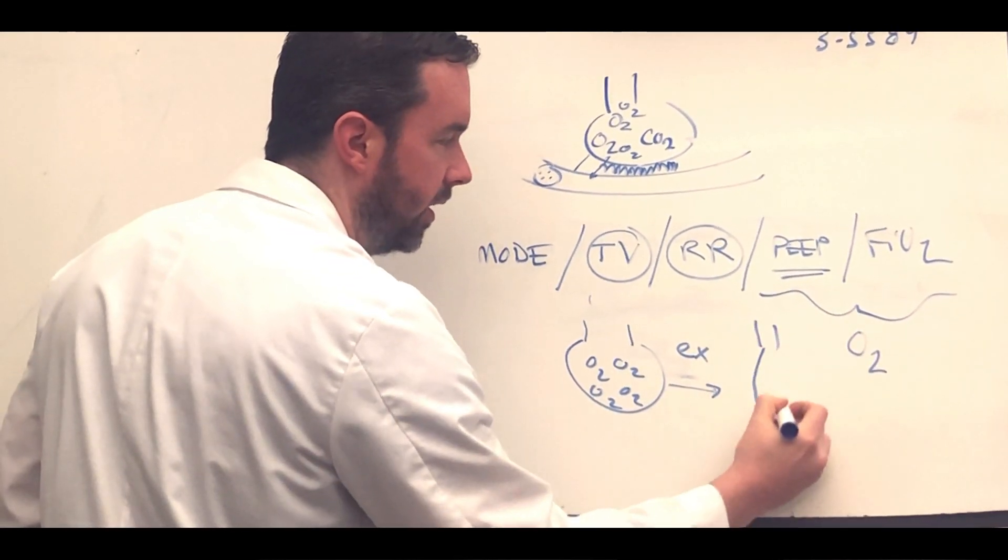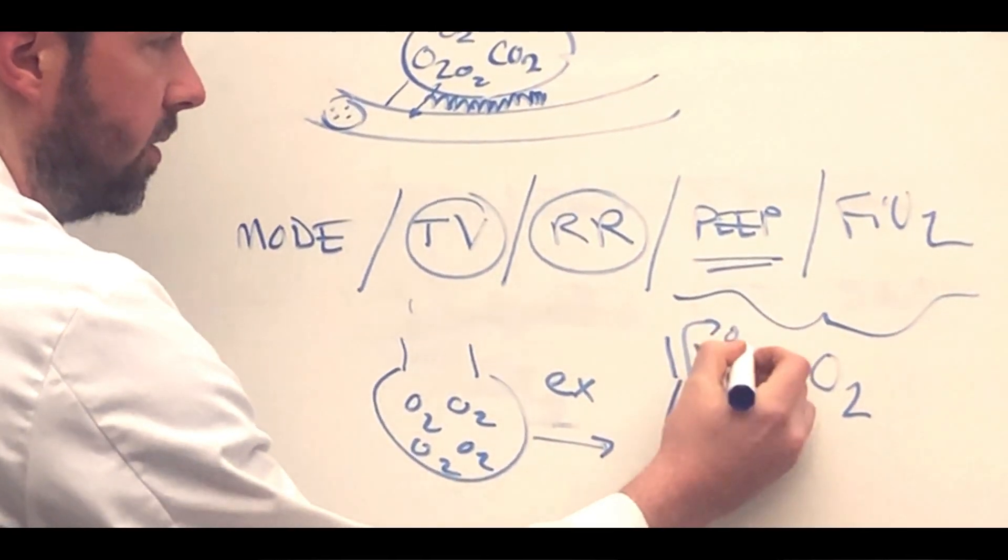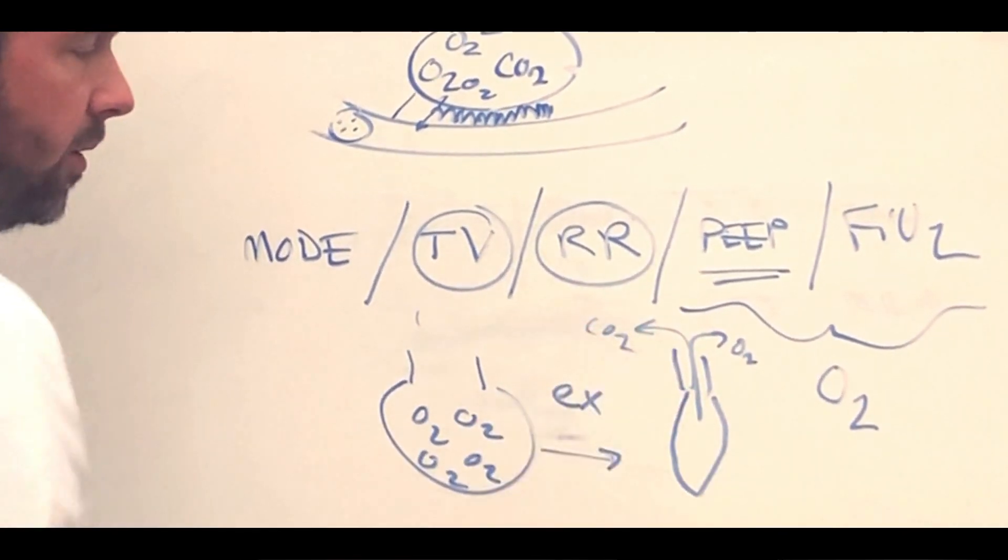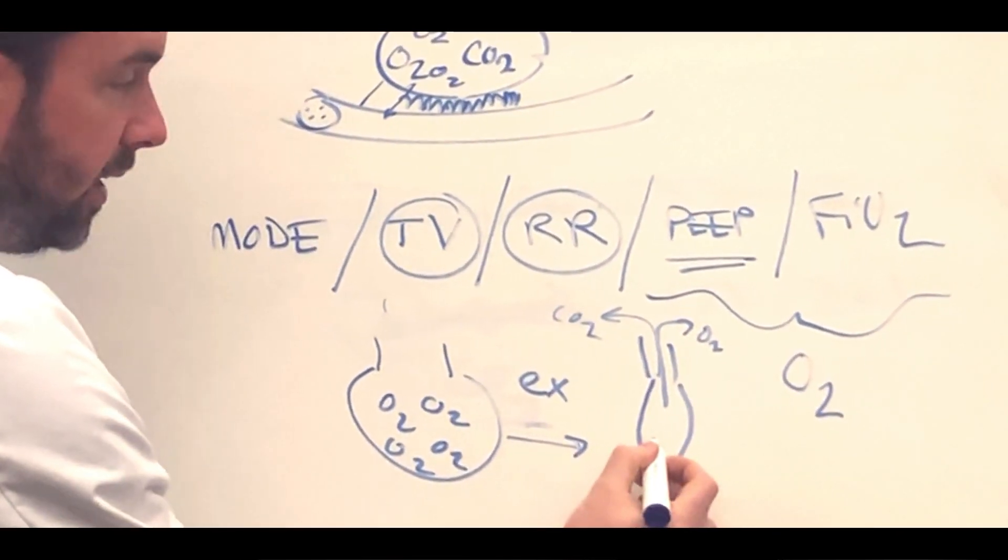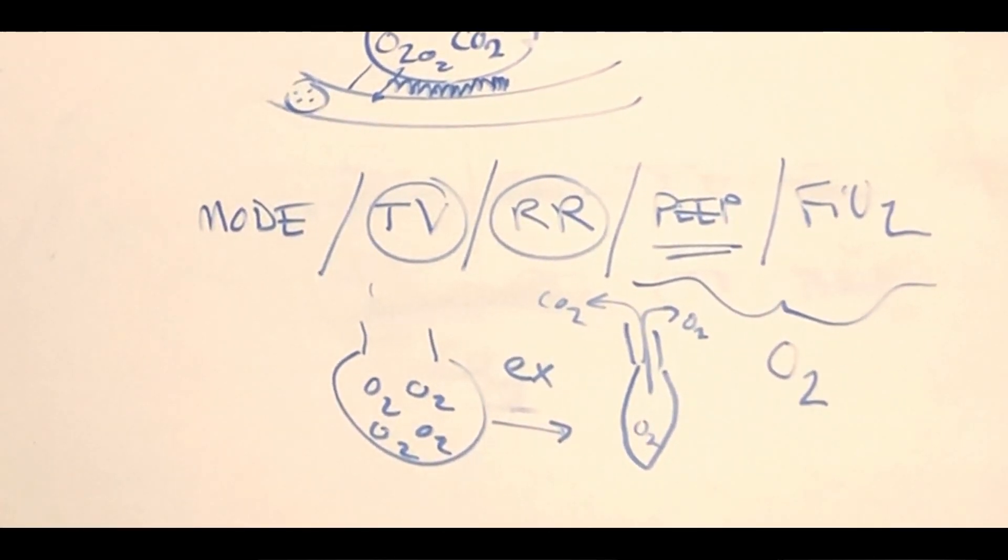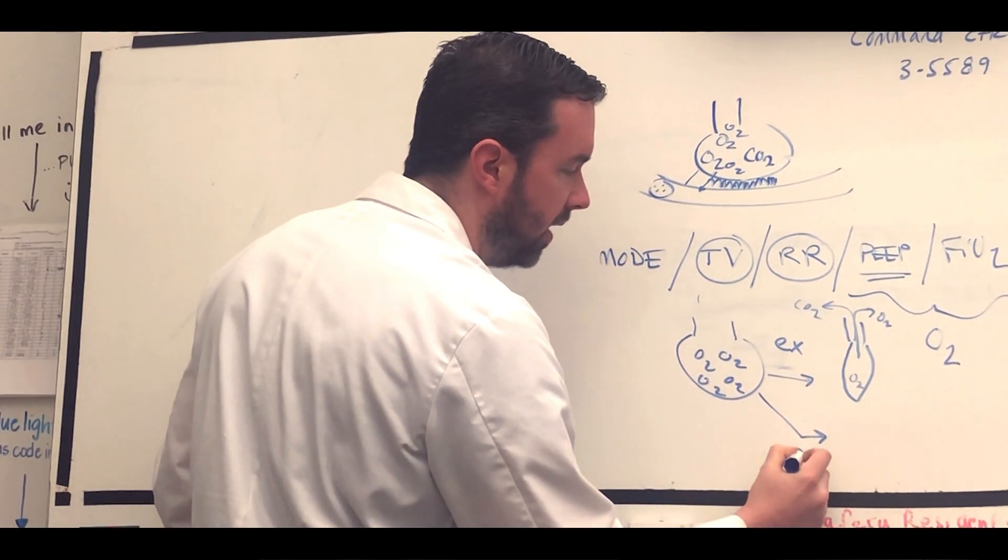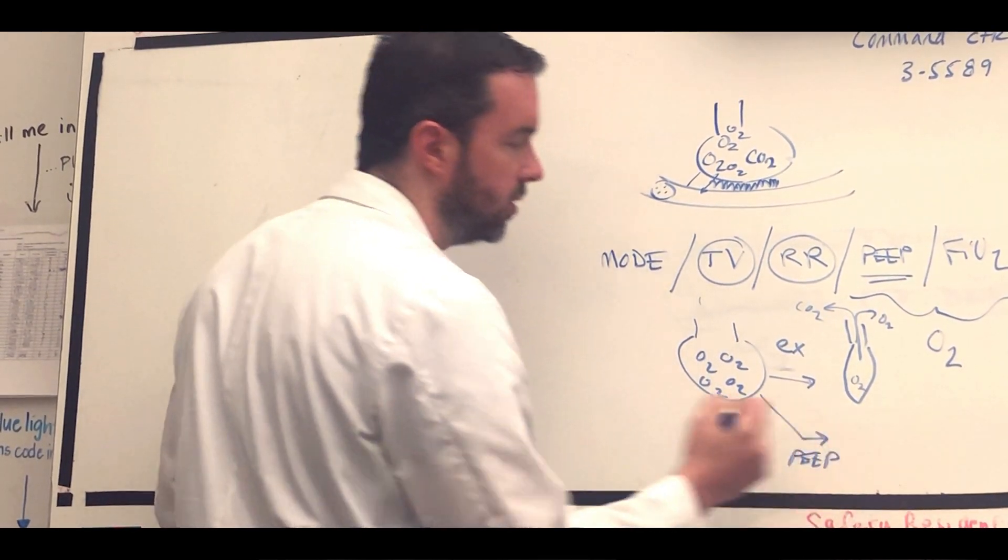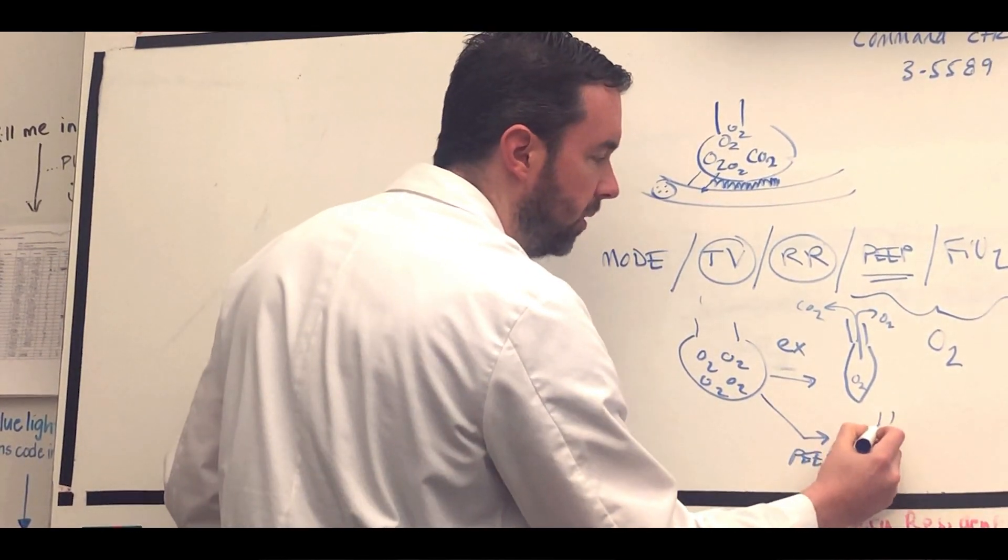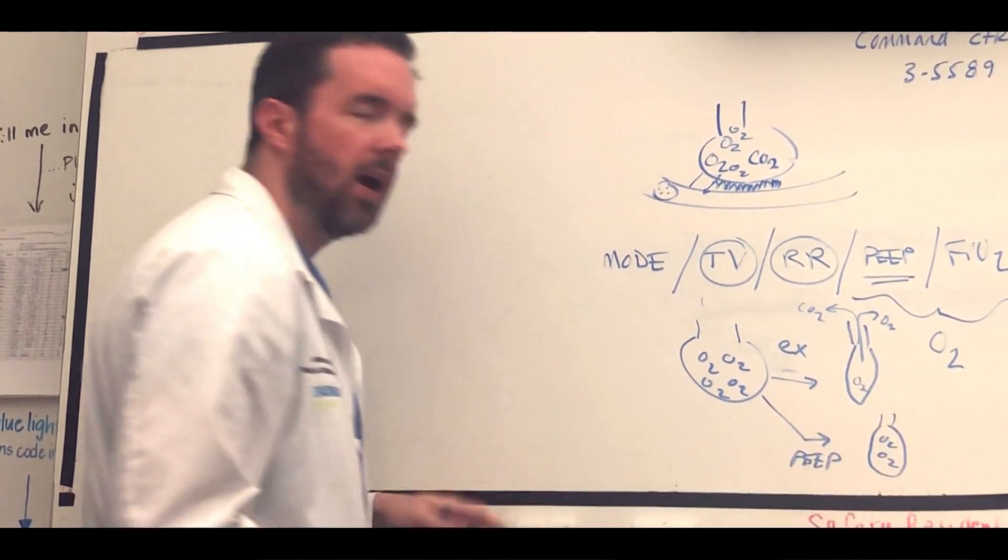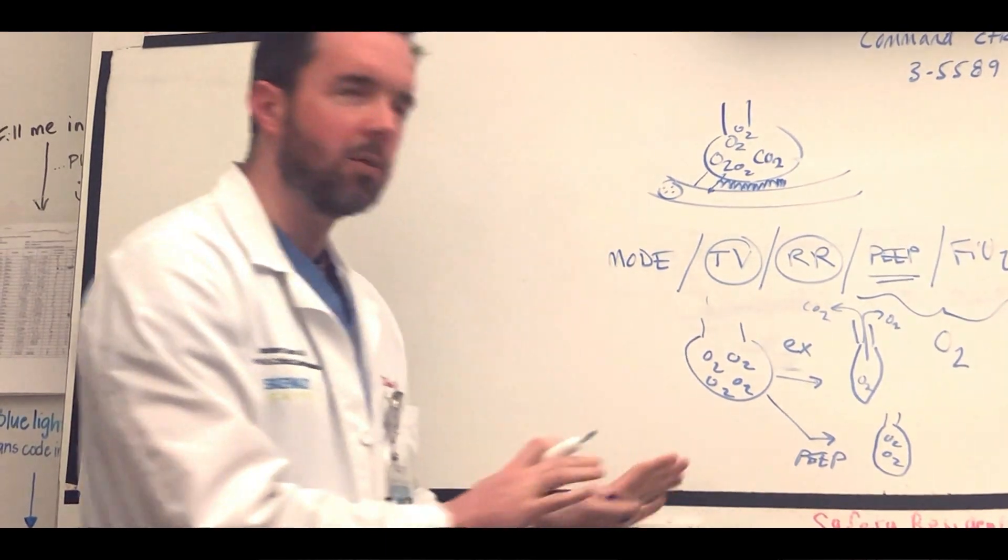As air goes out on exhalation from the alveolus, the alveolus is going to shrink and you're going to lose some oxygen. Typically, not much oxygen is left to diffuse across anymore. By adding PEEP, positive end expiratory pressure, what we do is we splint open that alveolus a little bit more. We tell some oxygens, hey guys, hang out at the party a little bit more. Party's not over.